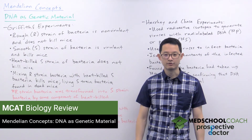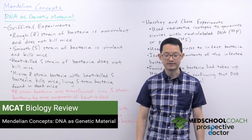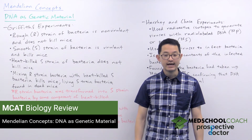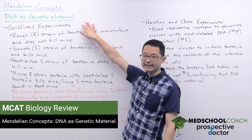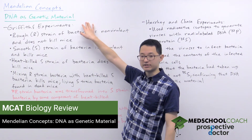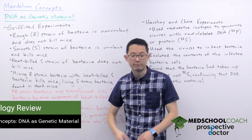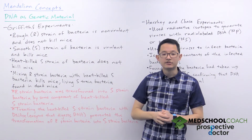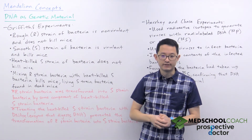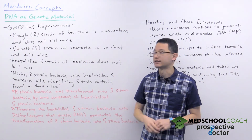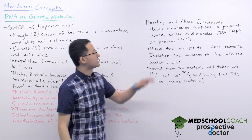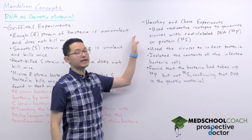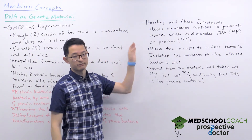In the next few videos we're going to go over Mendelian concepts of genetics. This video is going to start by looking at DNA as genetic material. In particular we're going to take a look at two experiments that demonstrated this: the Griffith's experiments as well as the Hershey and Chase experiments.